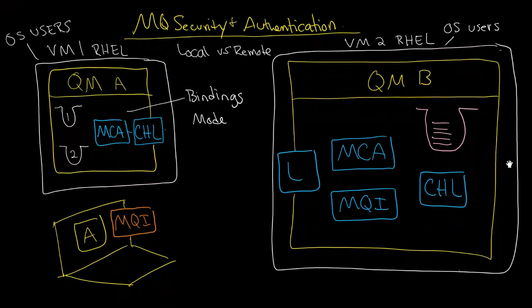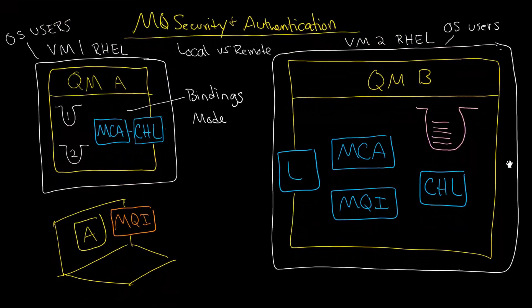There's much more detail about that in the MQ 7.5 Secure Messaging Scenarios with WebSphere MQ book, and also on the Knowledge Center. So that's bindings mode — the point is that's local: you have local connections, that is a possibility. It's when you do remote that it's not just more complicated from a network standpoint, but also more complicated from a security standpoint.